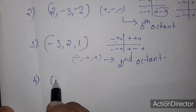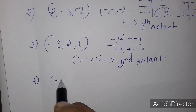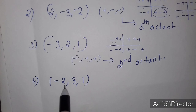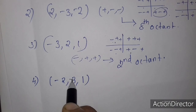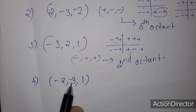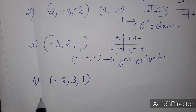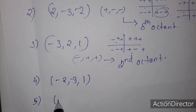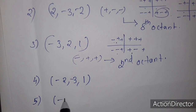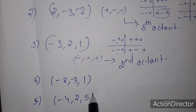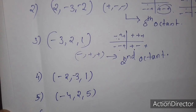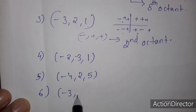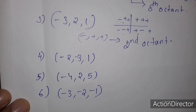The point is (-2, 3, 1). The coordinates are minus two, three, one — so signs are minus, plus, plus.